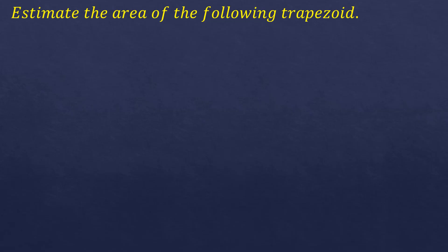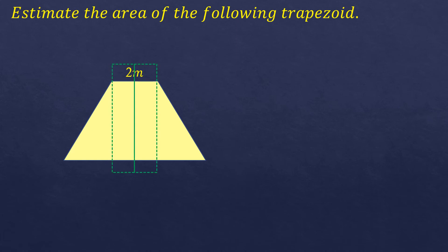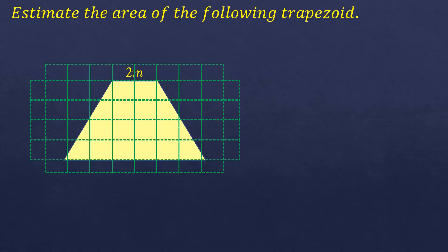Estimate the area of the following trapezoid. Here's the given trapezoid, and the only given measurement is the top base, which is 2 meters. That's not enough to get the exact area, so we'll estimate. We can use the 2-meter base as our basis for the grid width, placing 2 grids of 1 meter each, then expand the grid uniformly to cover the whole trapezoid.